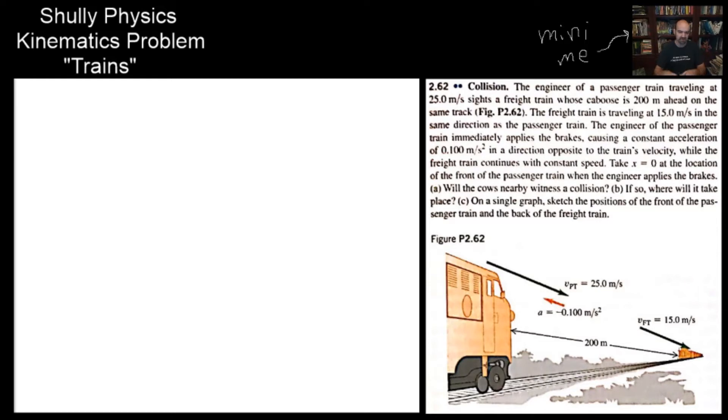The front of the passenger train and the back of the freight train should be in the same position at the same time if there's going to be a collision. What we're looking for is where they have the same position at the same time, the same moment of time. So those T and X, the X of T function and the time should be the equal parts in both of these equations of motion.